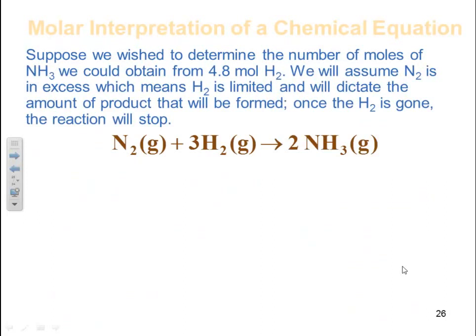Now suppose we wish to determine the number of moles of ammonia we could obtain from 4.8 moles of hydrogen. We'll assume in this case that nitrogen is in excess, which means that hydrogen is my limiting factor, and will dictate the amount of product that will be formed. Once all the hydrogen is gone, the reaction is going to stop.